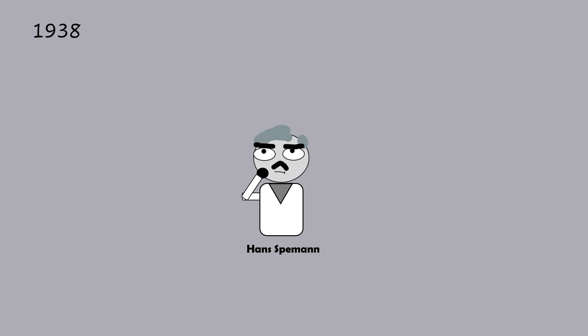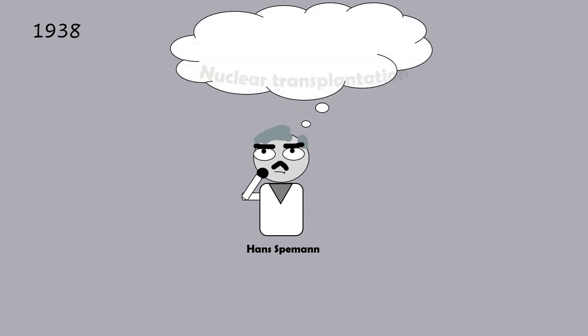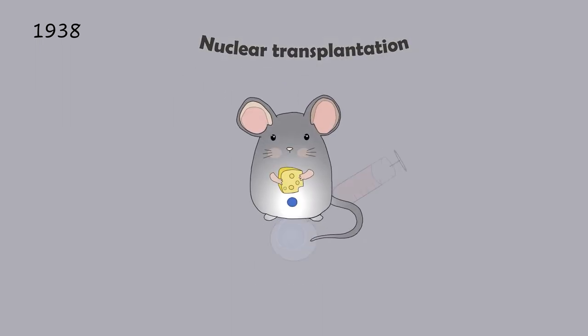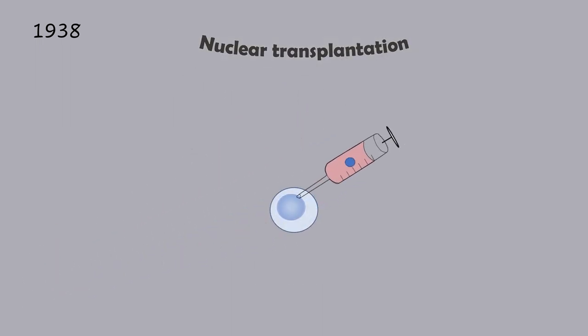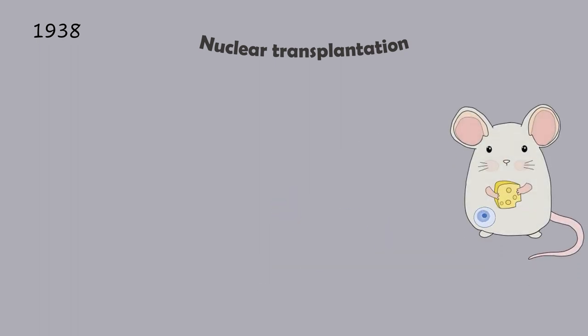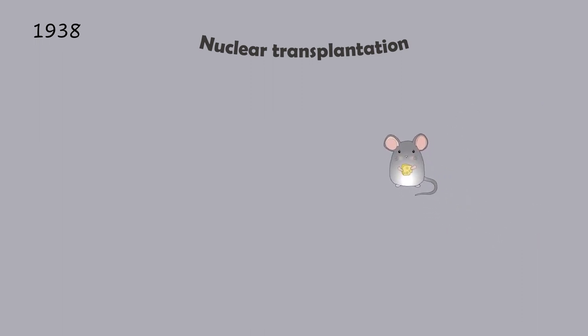In 1938, Nobel laureate Hans Spemann developed the concept of nuclear transplantation. The process involved injecting a nucleus from an adult donor cell into an oocyte whose nucleus had been removed, generating a cloned embryo. This embryo could then be transferred to the uterus of another female, where the embryo could potentially grow. This infant would be an exact clone of the donor animal.